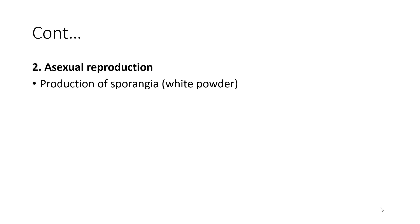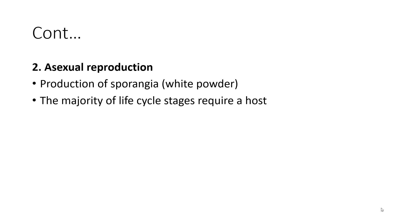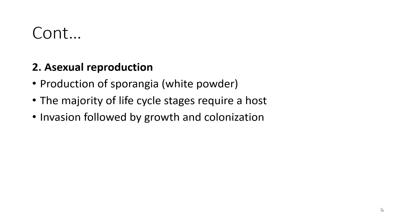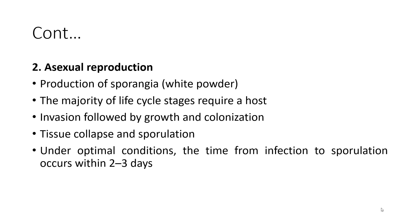Asexual reproduction: it produces sporangia, which looks like white powder or icing sugar. The majority of life cycle stages require a host, as Phytophthora capsici can survive in the soil for certain periods of time as oospores. Invasion is followed by growth and colonization. The tissue collapse and sporulation occur. Under optimal conditions, the time from infection to sporulation occurs within two to three days.